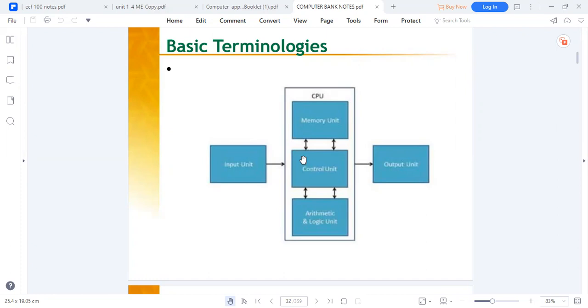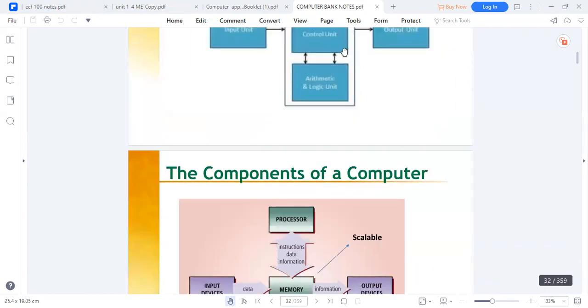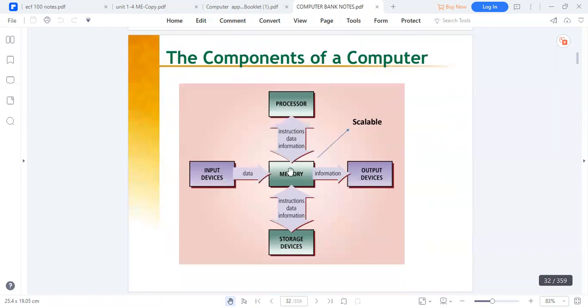We have the control unit which processes the data with an arithmetic unit which calculates it, then output devices emanate from the output unit. We have speakers, printers, and disks where we can burn CDs. Those are all part of the output. These are the components that define a computer.